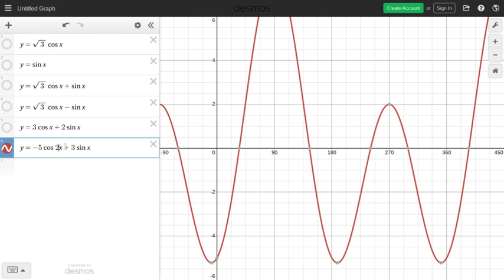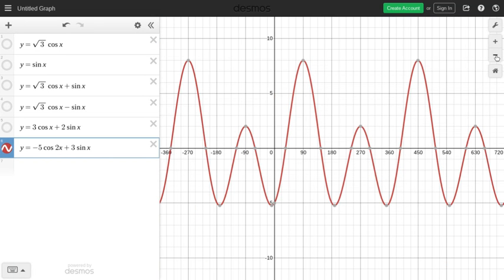Now if I change this to a double angle and this to a single angle, then that makes the curve look a lot more different. Okay, let's just zoom out there. Although if they're both double angles, what happens?